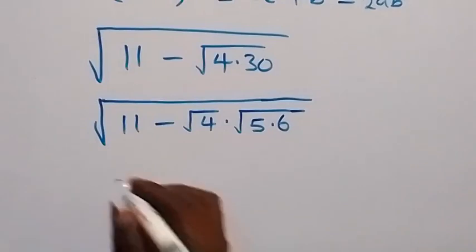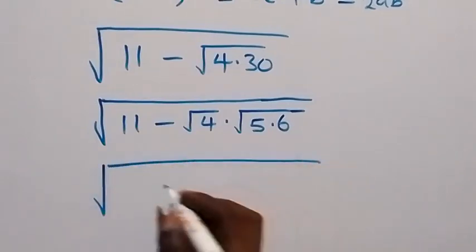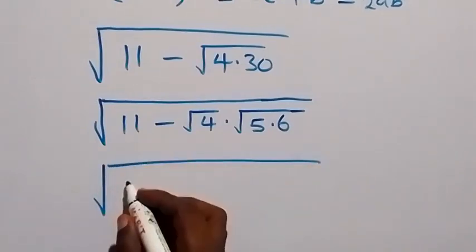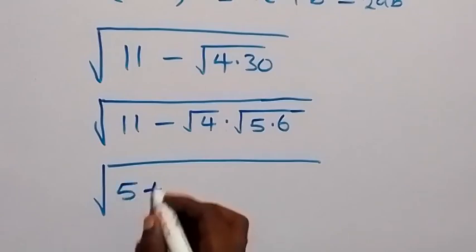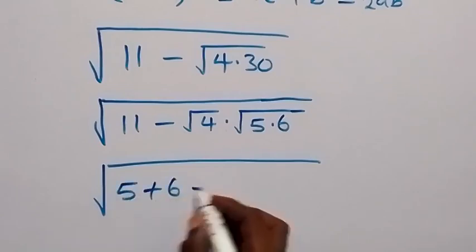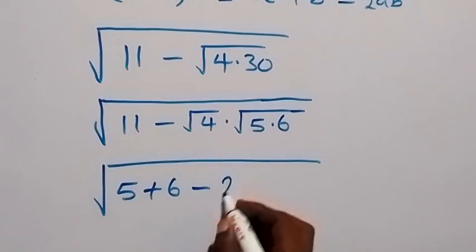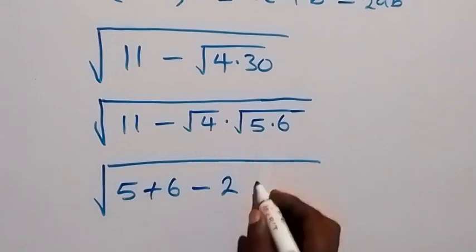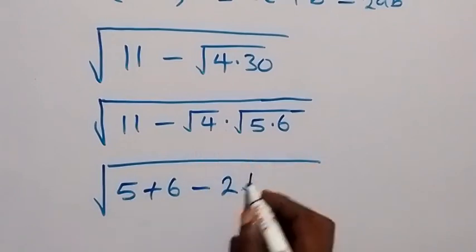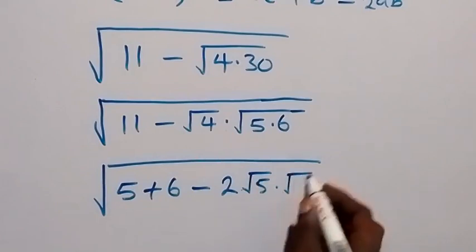Then from here, we can write as (5 plus 6) minus √4, that is 2, then when we separate this one we have √5 times √6.